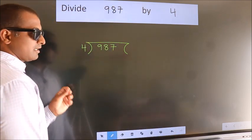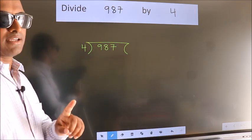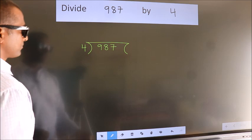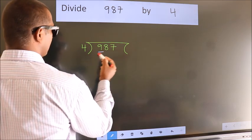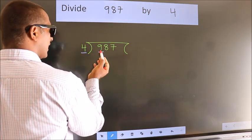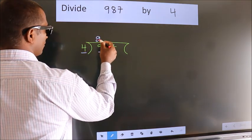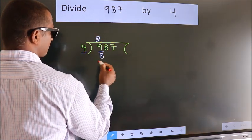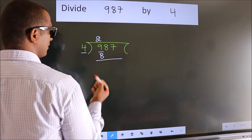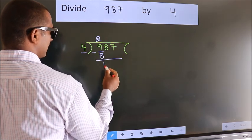This is step 1. Next, here we have 9, here 4. A number close to 9 in the 4 table is 4 twos, which is 8. Now we should subtract. We get 1.